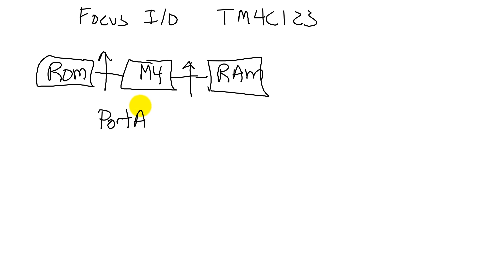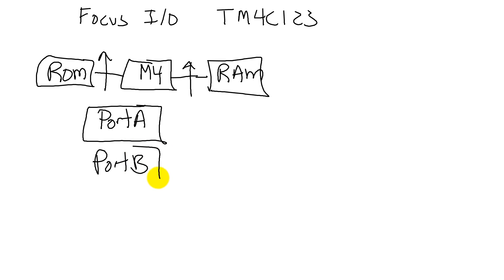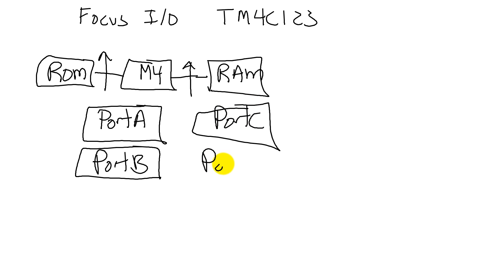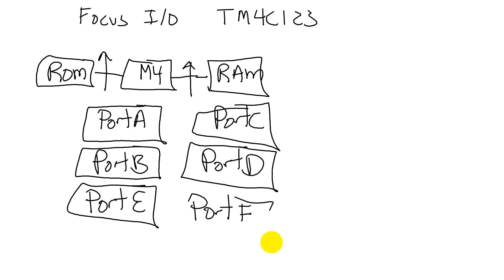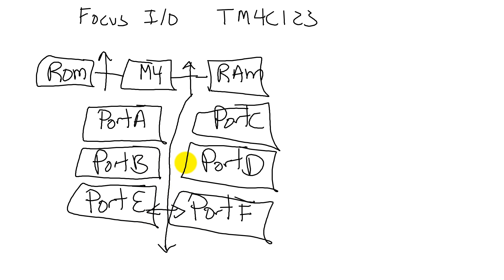The ports are labeled port A, port B, port C, port D — there are a lot of them, it's really important — port E and port F. They're all connected on the system bus so that the processor and your programs can access these ports.